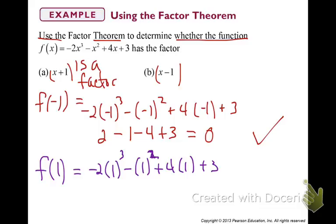So real quick, of course, 1 squared is 1. So we just have negative 2. This is minus 1 plus 4 and plus 3. So what's that give us? Negative 2 and negative 1 is negative 3. That would cancel out the positive 3 and we would be left with 4.